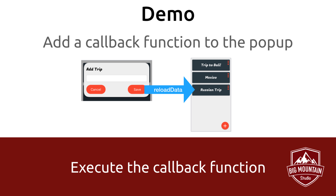The first thing I want to do is implement this callback function and make sure it is called when the user taps the save button on the pop-up. We're going to go into the project, add the callback function, and execute it just to test it. Then once that is working, we'll work on actually adding the data to our data store and showing it in the trips list.